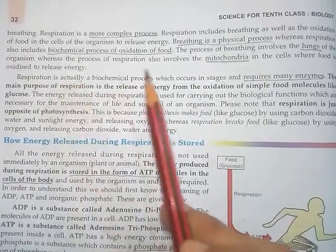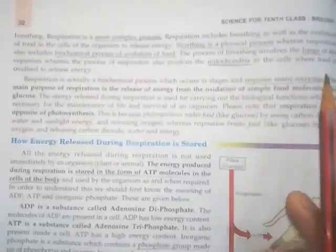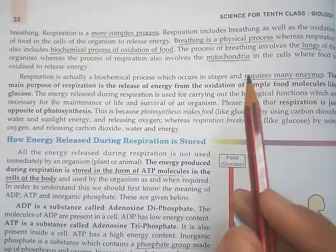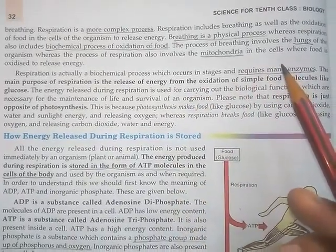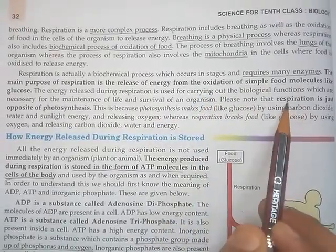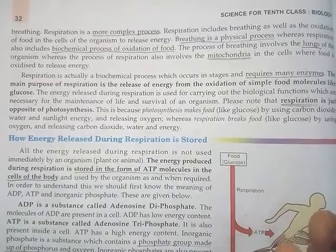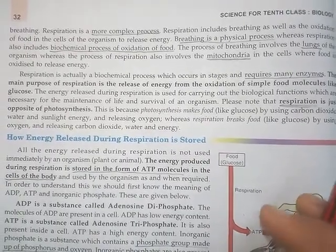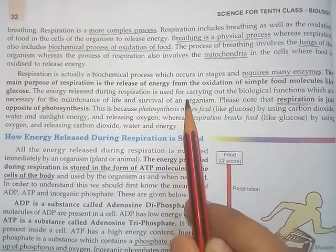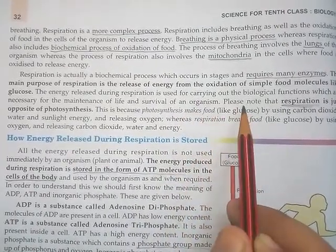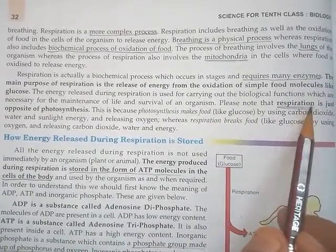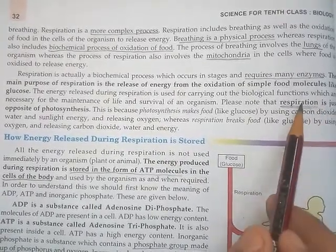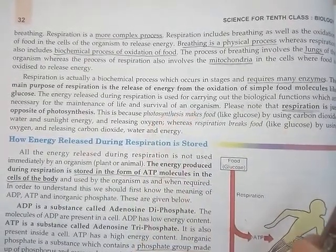Respiration is a biochemical process that requires many enzymes. The glucose in food is oxidized to release energy. If we look closely, respiration is exactly opposite to photosynthesis. In photosynthesis, food is prepared using carbon dioxide and water, and oxygen gas is released. But in respiration, the opposite happens — oxygen helps to break down food, releasing carbon dioxide and water. So respiration and photosynthesis are totally opposite to each other.